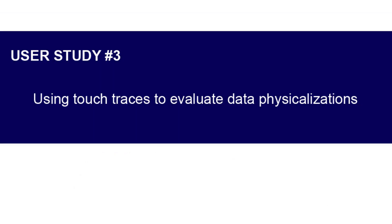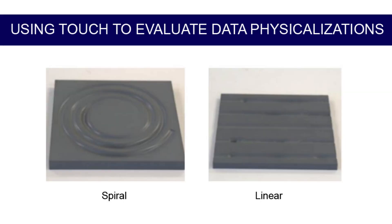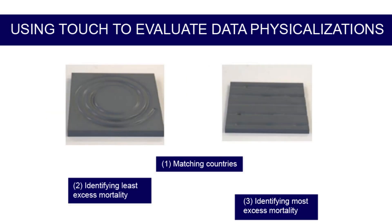User Study 3 explores touch tracking on data physicalization and how touch information might support the evaluation of physical data displays. We created two data physicalizations of COVID-19 data showing excess mortality in countries from January 2020 to December 2021, where deeper valleys indicate more excess mortality. One model represents excess mortality in one country with time as a spiral; the second represents five countries with time presented linearly. Participants were asked three questions: first, to determine which line on the linear model best matched the data on the spiral model; and in questions two and three, to identify high and low points of excess mortality on each model individually.